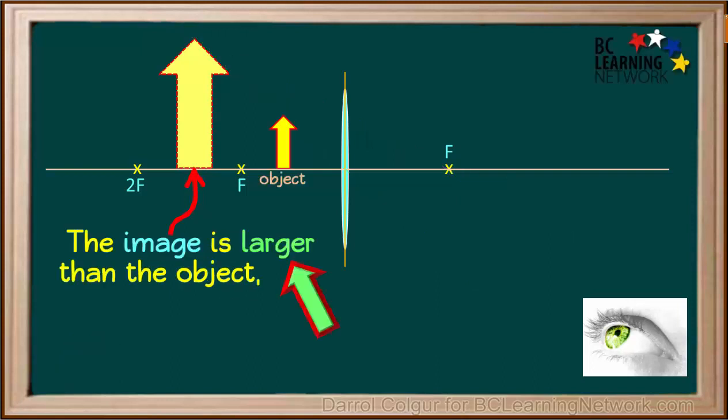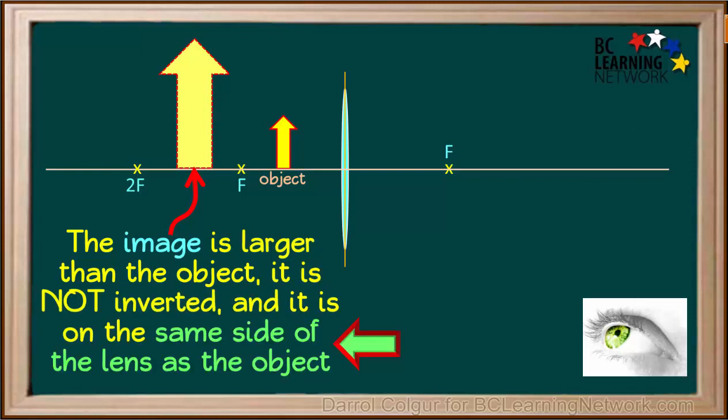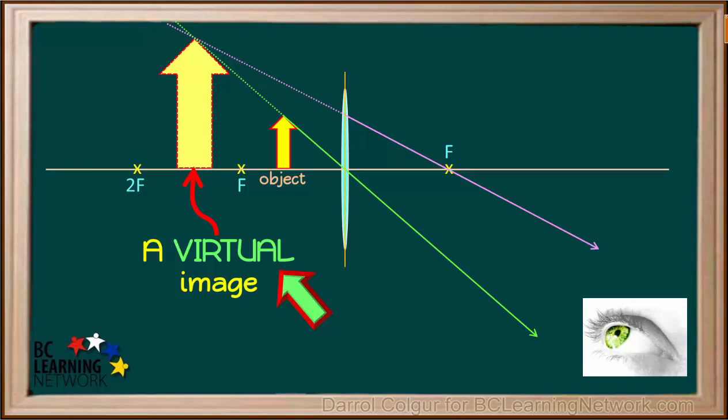To review, we see that when the object is placed between the focal point and the lens, the image is larger than the object. It is not inverted, but right side up. And it's on the same side of the lens as the object. And remember, this is a virtual rather than a real image.